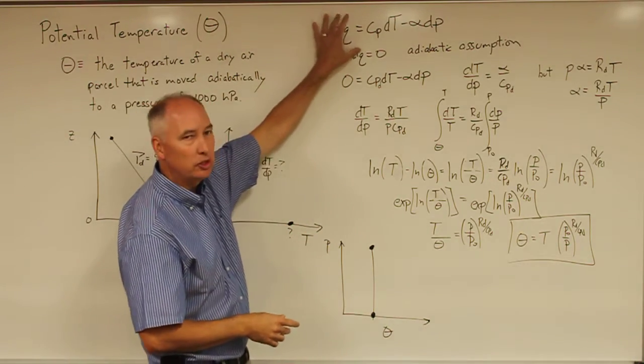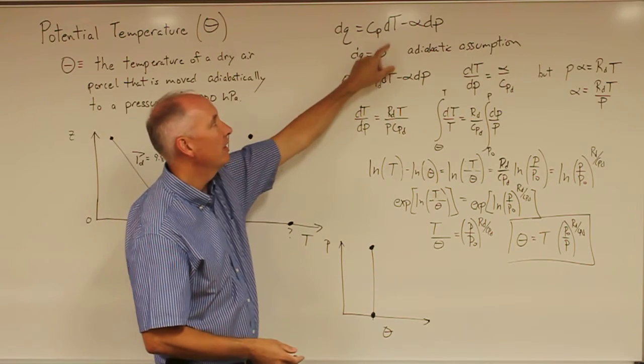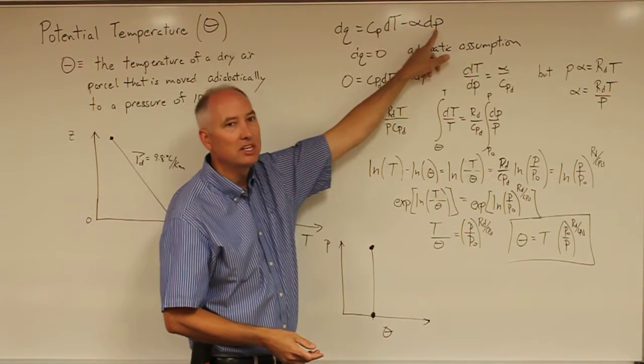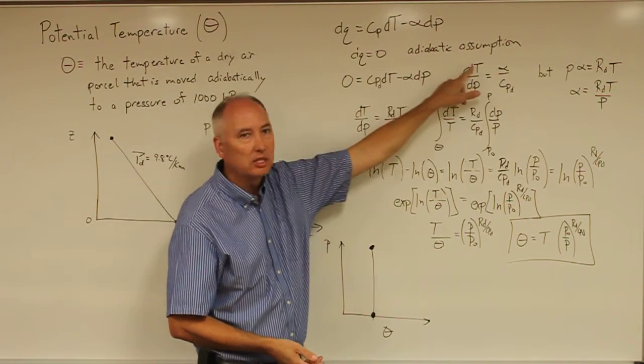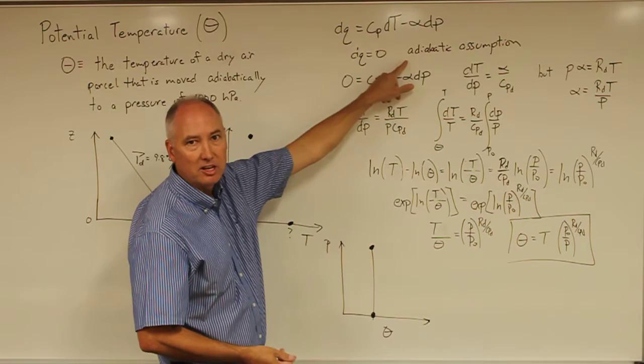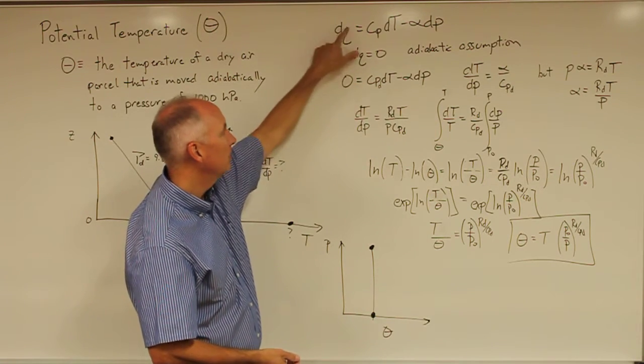So we're actually choosing a form of the first law of thermodynamics that already has DT and DP in it. And then we can make the adiabatic assumption. The adiabatic assumption tells me immediately that DQ is equal to 0.